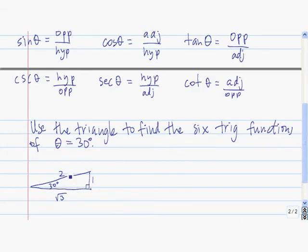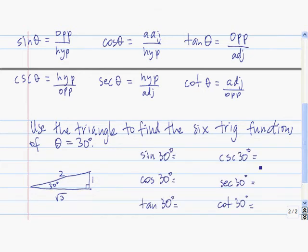Let's do this example. We'll use this right triangle with a 30-degree angle to evaluate the six trigonometric functions at theta equals 30 degrees. Starting with sine of 30 degrees: sine of 30 degrees is defined to be equal to the length of the side opposite 30 degrees divided by the length of the hypotenuse. So that's one half.